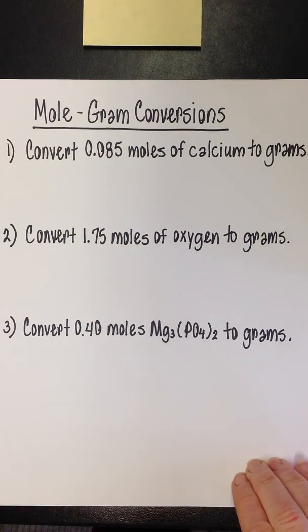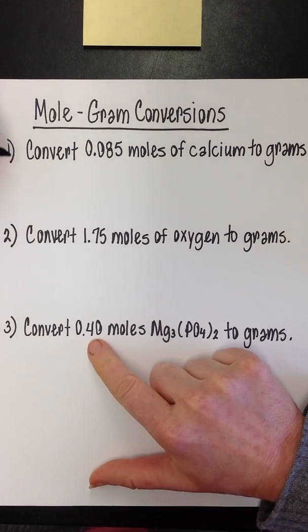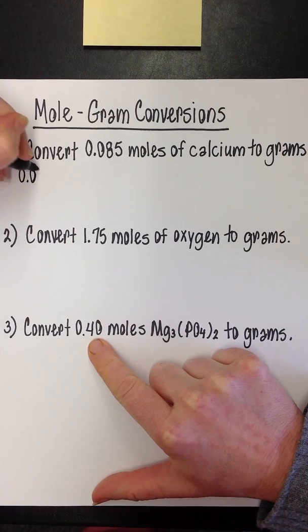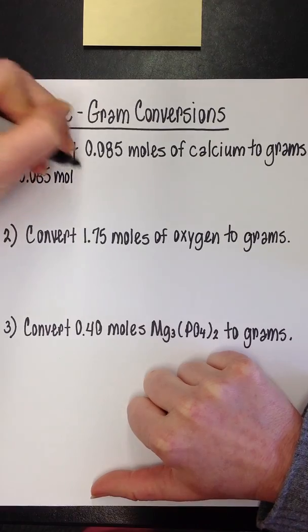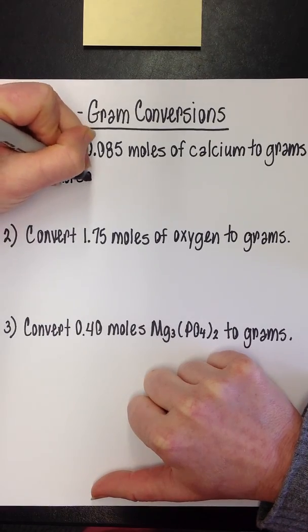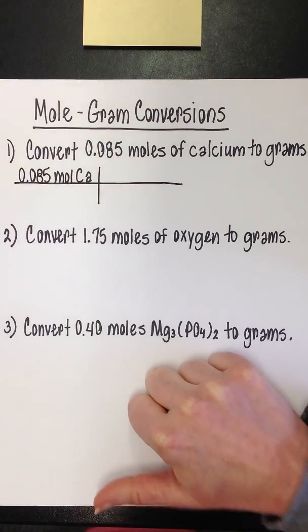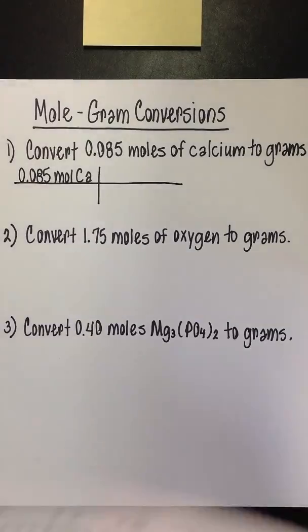Let's look at our first example. We're going to convert 0.085 moles of calcium to grams. Just like we did on our other conversions, we're going to start with the given. So we have 0.085 moles of calcium. The symbol for calcium is CA. We're going to draw our long line and our short line, and we ask ourselves, how can I get from mole to gram for calcium? What is that toggle button I can use? What is that tool for my chemistry toolbox?